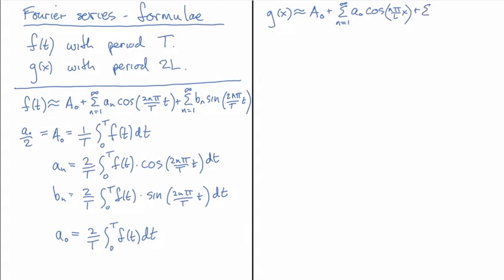Plus the sum from n equal 1 to infinity of bn, that should be an n here, and bn sine of the same, n pi over Lx.